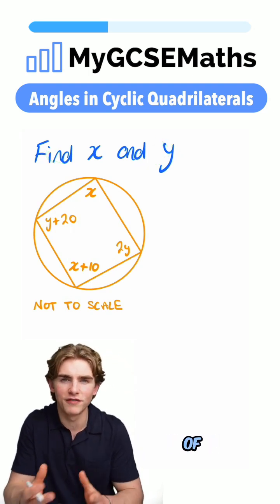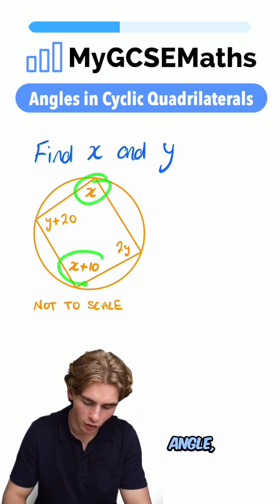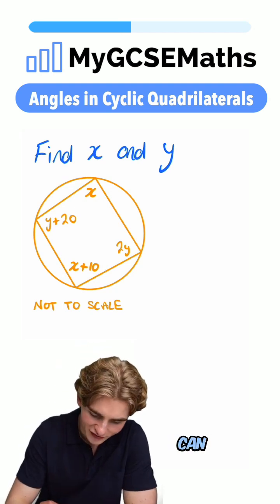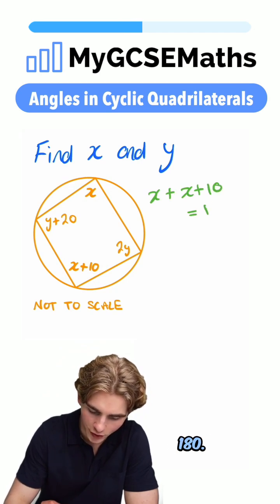Well, we can firstly set up a couple of equations that might help us. We know that this angle and this angle, when we add them together, have to be equal to 180. So we can say that x plus x plus 10 is equal to 180.